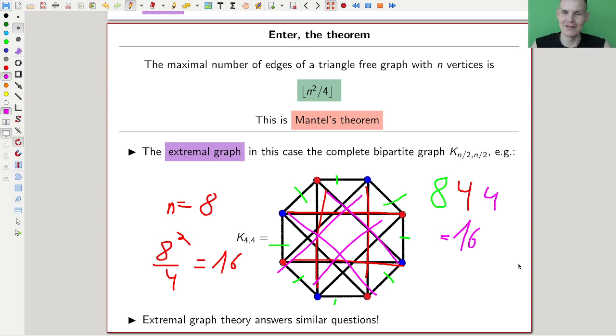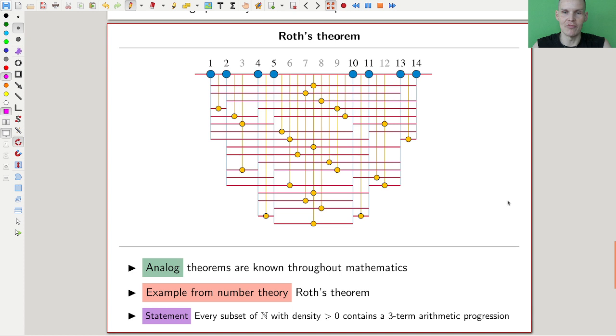So the replacement for the theorem here, where trees are now replaced by bipartite graphs. In extremal graph theory we will answer very similar questions. This is kind of nice because this theorem itself was motivated by a theorem which was proven much later. It's called Roth's theorem. So it was motivated by something that was proven much later. Analog theorems are known throughout mathematics, and this one is a very famous one.